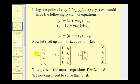To do this, we start by forming matrix y, which contains the given y values. Matrix x will have two columns: a column of ones and a column of the given x values. Matrix A will contain the y-intercept and slope, and matrix E will contain all of the errors. This gives us the matrix equation y equals x times A plus E. Our goal is to solve this equation for A.